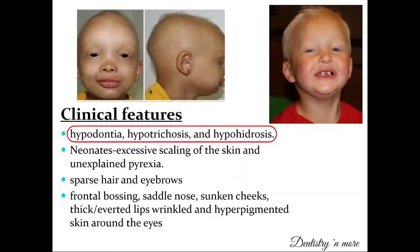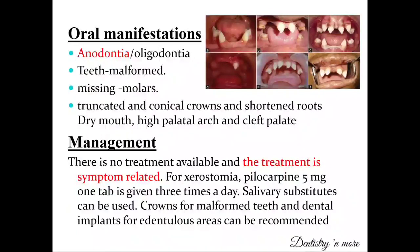The classic clinical features of ectodermal dysplasia — highlighted as essential for your answer — are hypodontia, hypotrichosis, and hypohidrosis. Neonates present with excess scaling of the skin and unexplained pyrexia. Other features include sparse hair and eyebrows, frontal bossing, saddle nose, sunken cheeks, thick or everted lips, and wrinkled, hyperpigmented skin around the eyes. Oral manifestations include anodontia, oligodontia, malformed teeth, missing molars, truncated conical crowns, shortened roots, xerostomia, high palatal arch, and cleft palate.